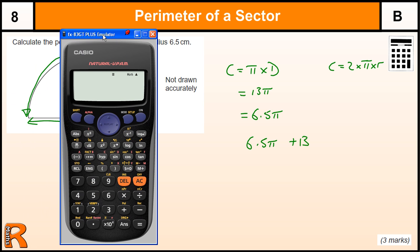Quite often people like to have these as decimals there. So 6.5 pi plus 13 gives us 33.42035225, or 33.4, three significant figures, three marks.